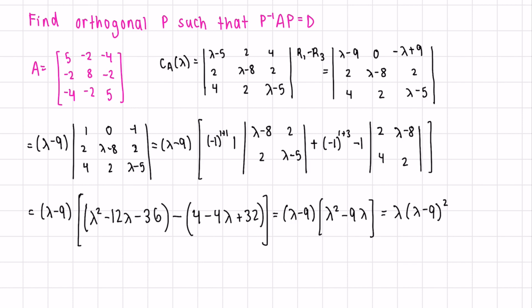Next, we can factor out lambda and we'll be left with lambda minus nine squared. This means that our two eigenvalues are zero and nine. The first has a multiplicity of one and the second has a multiplicity of two.